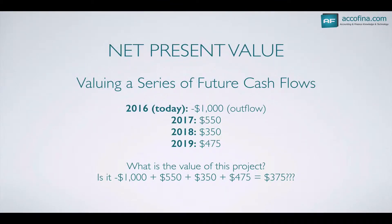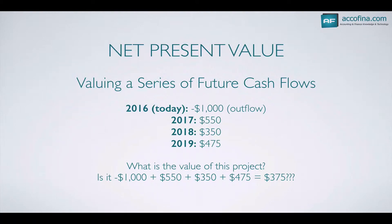Let's go through an example quickly — let's value a series of future cash flows. In the year 2016, which is today, we invest $1,000, which is an outflow, perhaps in a gold mine. So minus $1,000 in our new gold mine to set up the equipment, dig the hole, and so forth. In 2017, we expect to receive $550 in gold. In 2018, we expect to receive $350 in gold. And in 2019, we expect to receive $475 in gold. So what is the value of this gold mine?